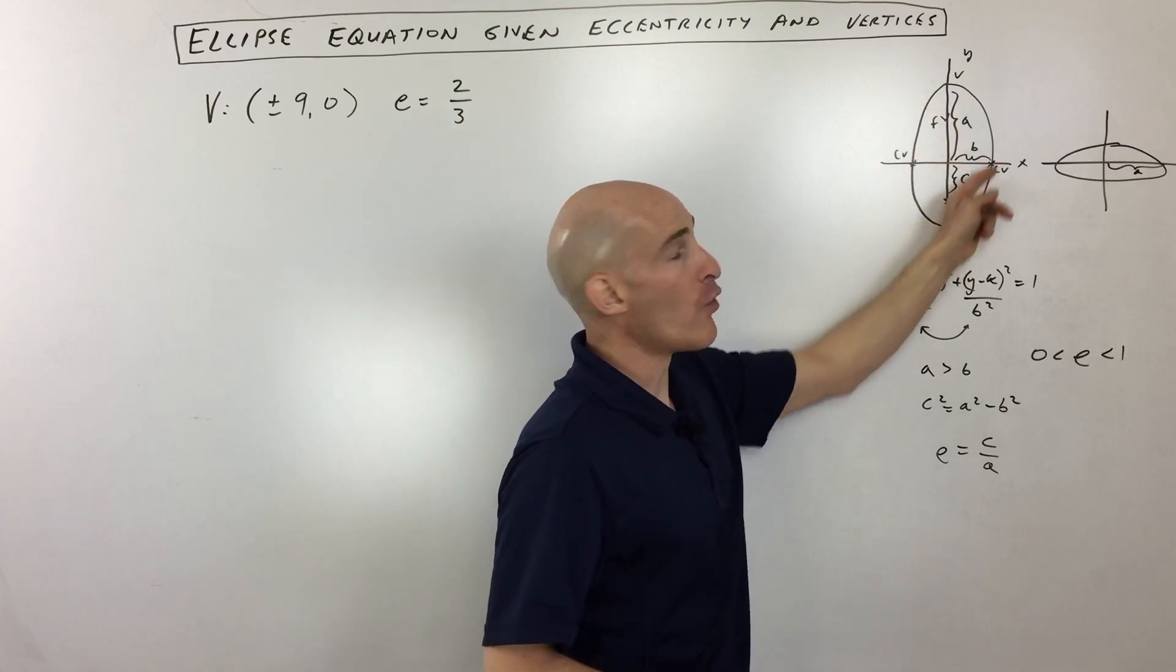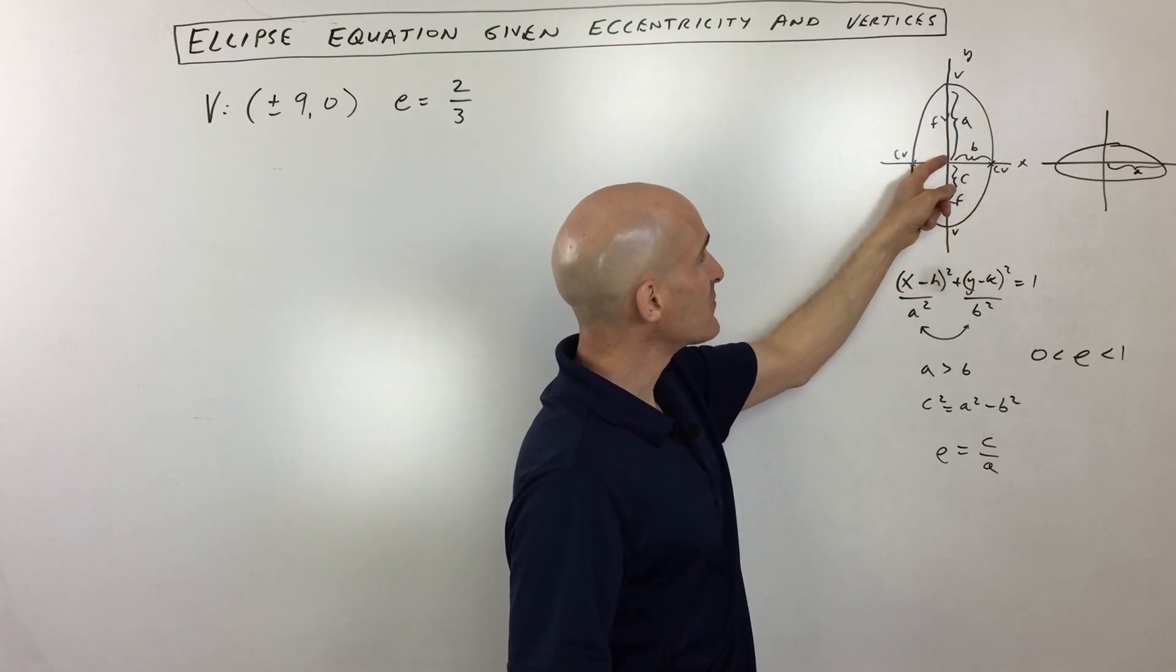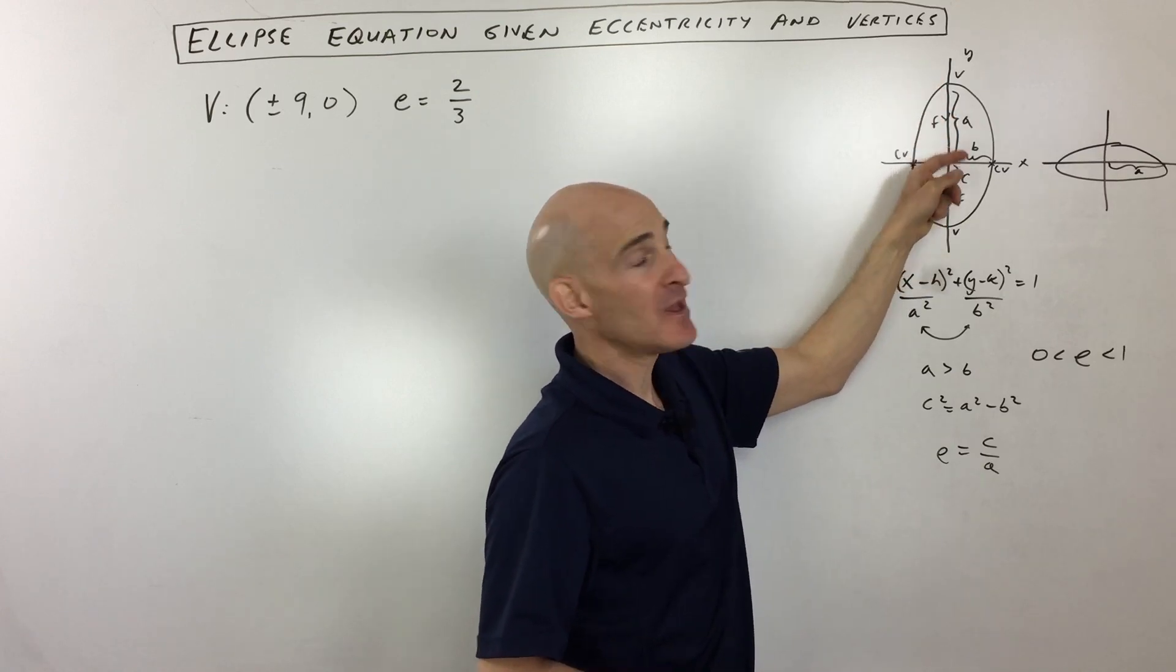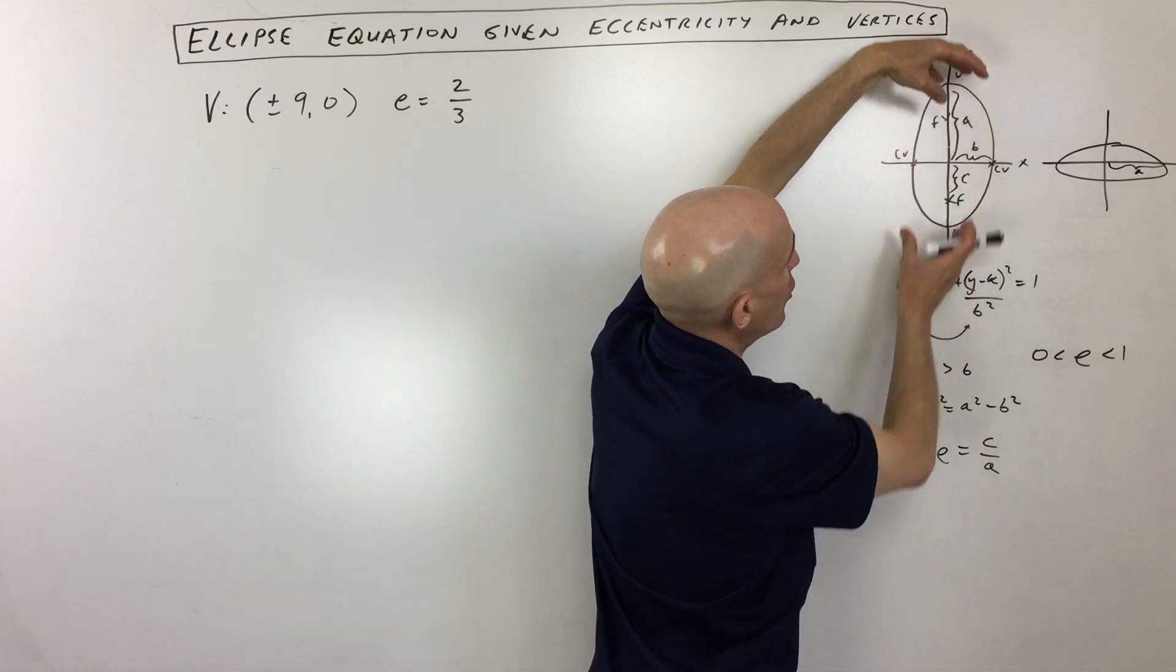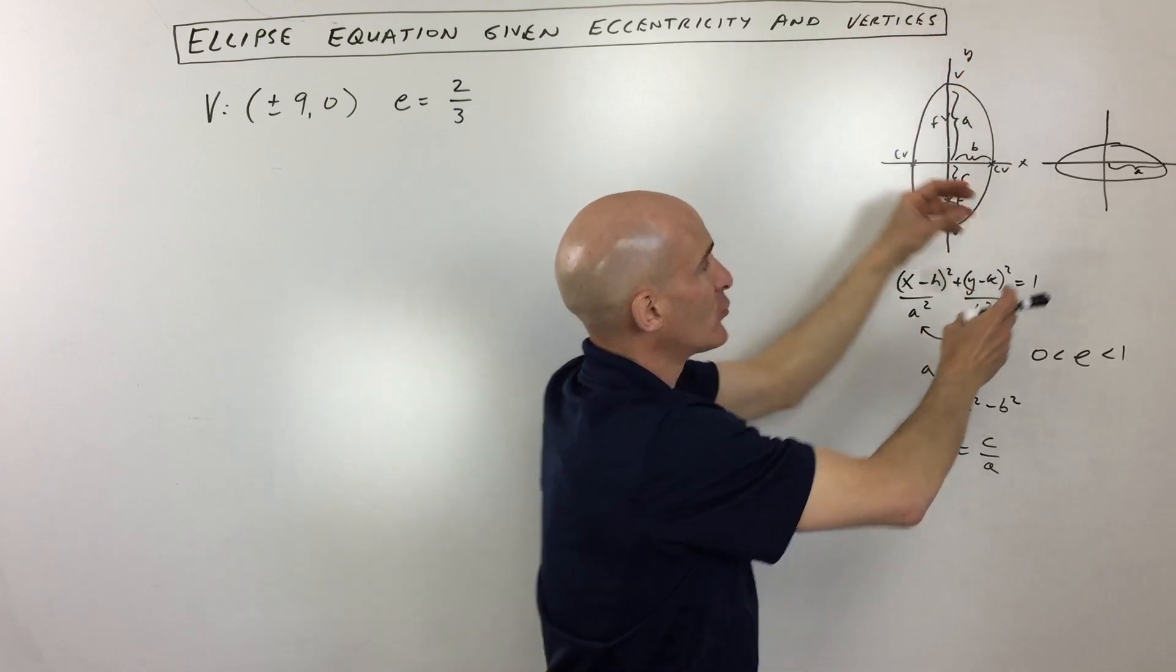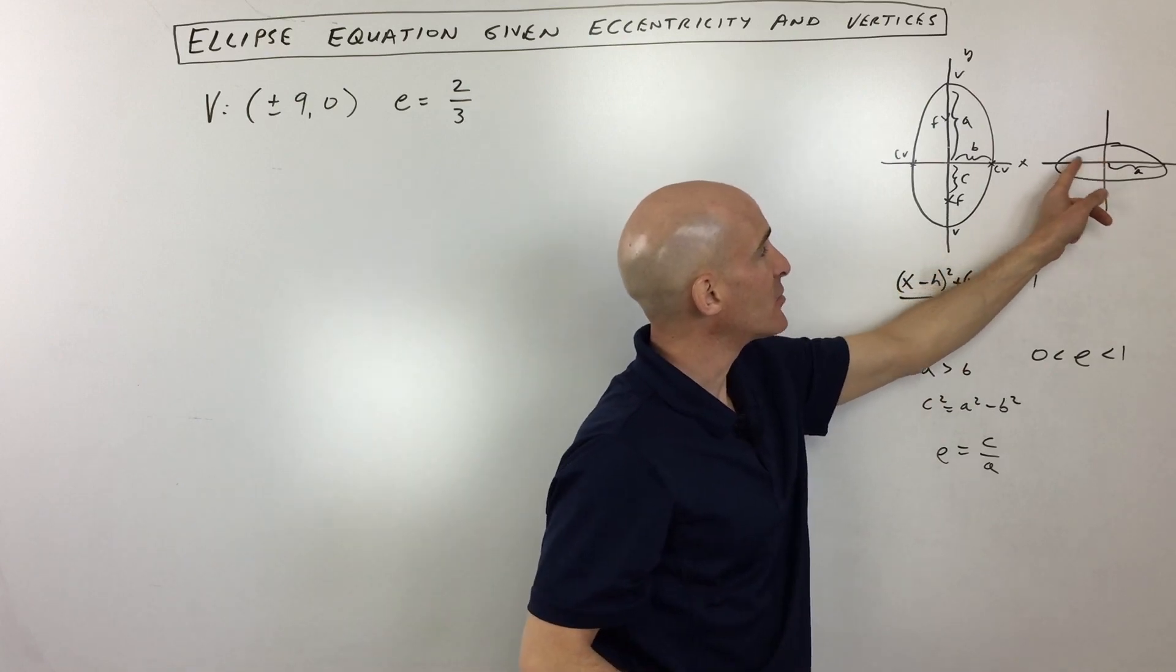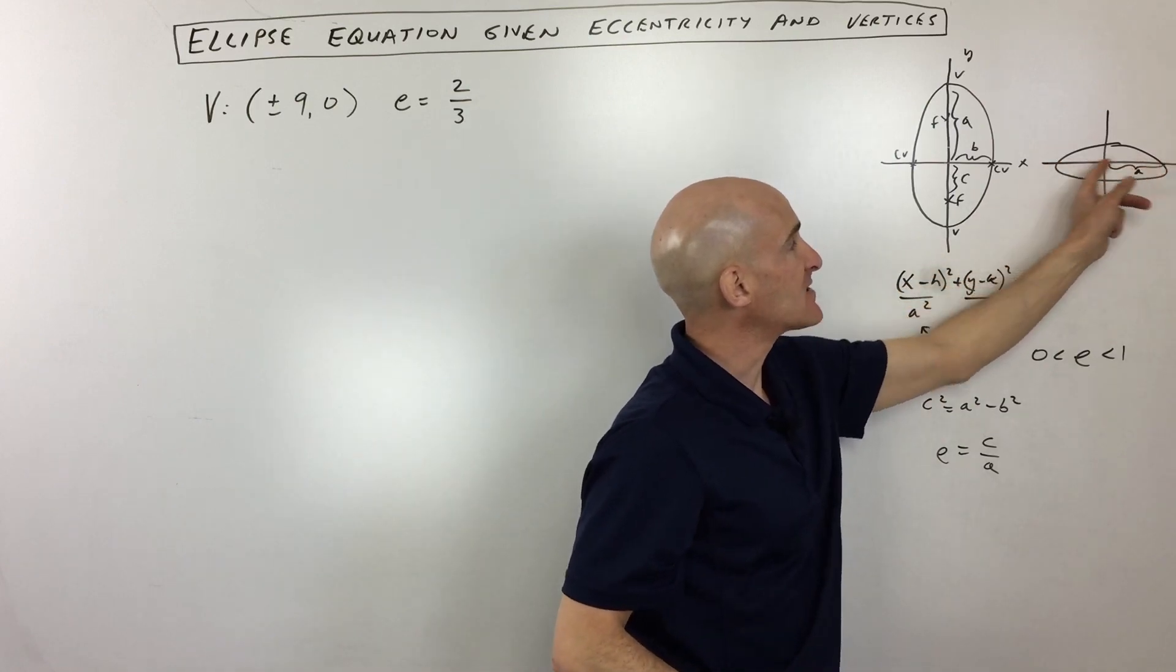The basic idea is that an ellipse is an oval shape. The distance from the center to the vertices, that distance we call a, and it's going to be either elongated in the vertical direction, like stretched in the vertical direction, or in the horizontal direction.